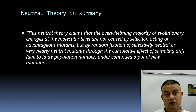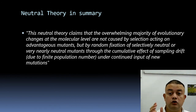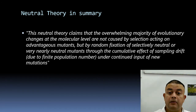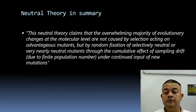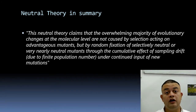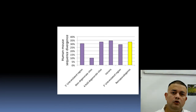The summary of Kimura's neutral theory, from his 1991 paper, is that the neutral theory claims the overwhelming majority of evolutionary changes at the molecular level are not caused by selection acting on advantageous mutants, but by random fixation of selectively neutral or very nearly neutral mutants through the cumulative effect of sampling drift due to finite population size under continued input of new mutations. Adaptation does not play a significant role in evolution as per neutral theory.